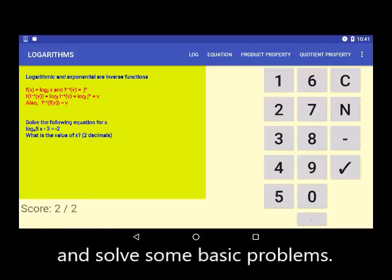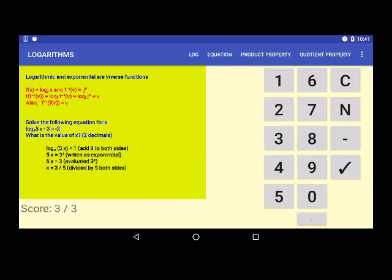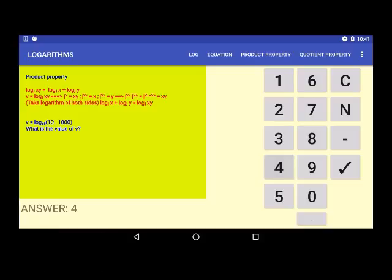The equation option proposes problems that are a little more difficult to solve. The property of product, property of quotient, power property, and change of base options generate problems that have to be solved in order to understand the properties of operations with logarithms.